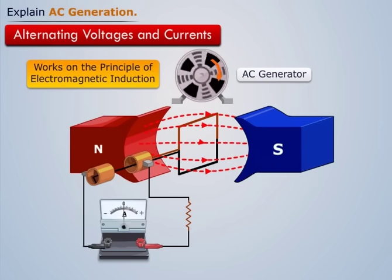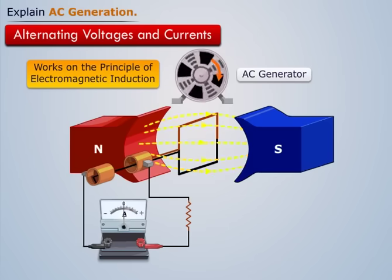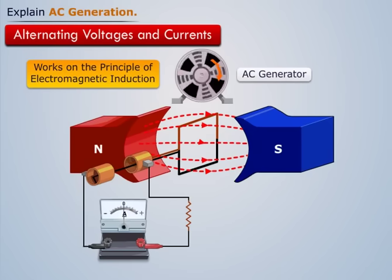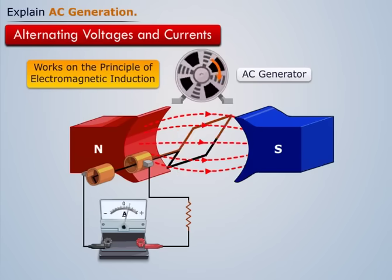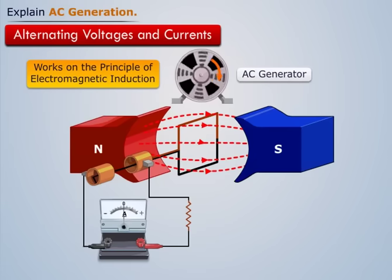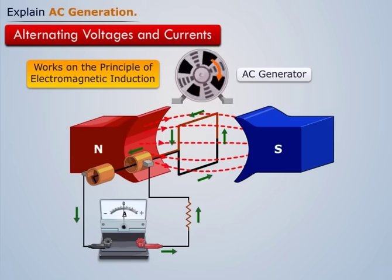It consists of north and south pole magnets which create magnetic flux lines between them and a single rectangular loop of wire called armature that can be rotated around a fixed axis. Slip rings are mounted on a shaft to which each end of wire is connected. Also brushes on which the slip rings ride to enable current to be transferred to the main circuit.